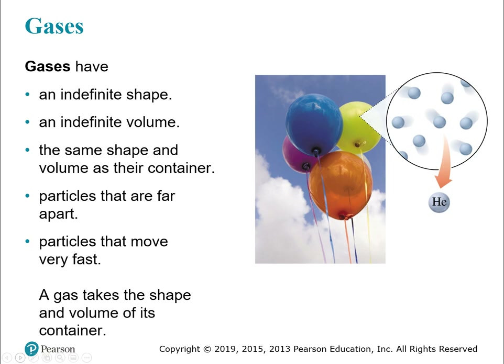Gases are loosey-goosey — they have an indefinite shape and an indefinite volume. Whatever volume and shape their container has, that's what the gas will be. You can take gas in a cube, then compress it into a smaller cube — same amount of gas, but it takes on the shape and volume of whatever container it's in. These particles are far apart and zipping around fast, like a backyard full of toddlers who just had birthday cake — running everywhere, bumping into each other.